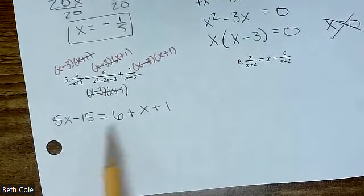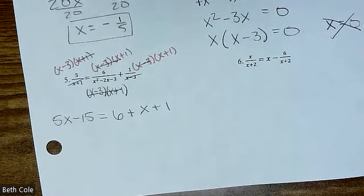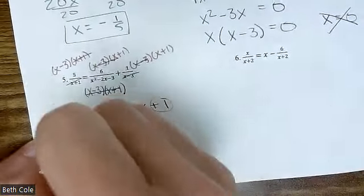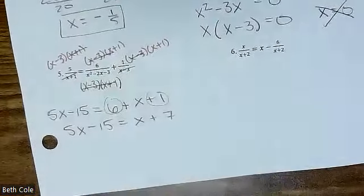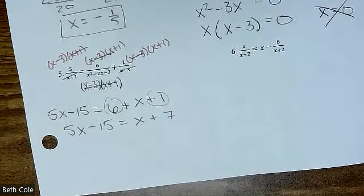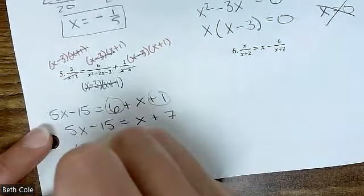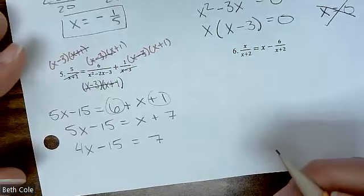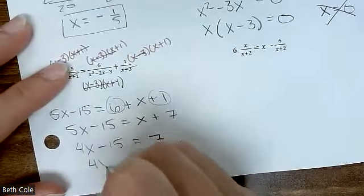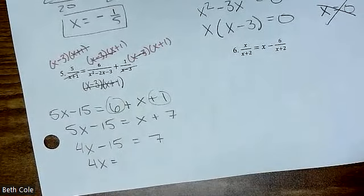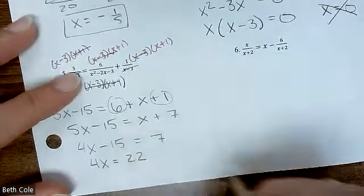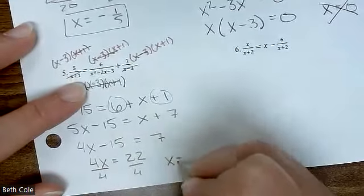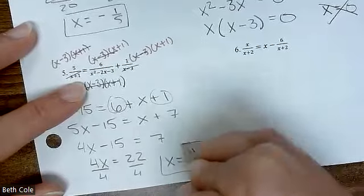Do you see a squared anywhere? No. So we do not need to evacuate — it's just a regular old algebra one problem. What would you do next? Like terms. So you get five X minus 15 equals X plus seven. Minus X gives four X minus 15 equals seven. Plus 15 gives 22. Divide by four — that's going to reduce to 11 over two.